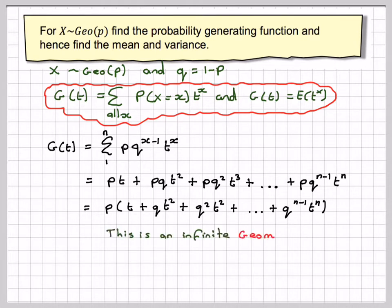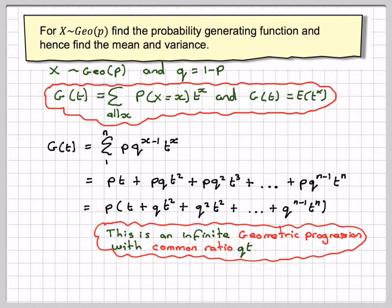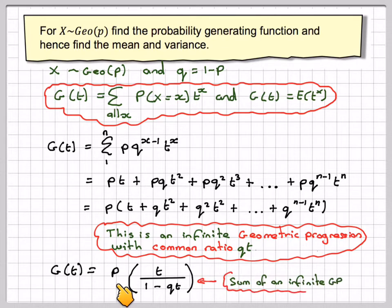This is an infinite geometric progression with common ratio qt. So G(t) will be the sum of a geometric progression, so it's p, the first term here, and the sum of this will be t divided by 1 minus qt. This comes from the formula u/(1-r), the sum of an infinite geometric progression.